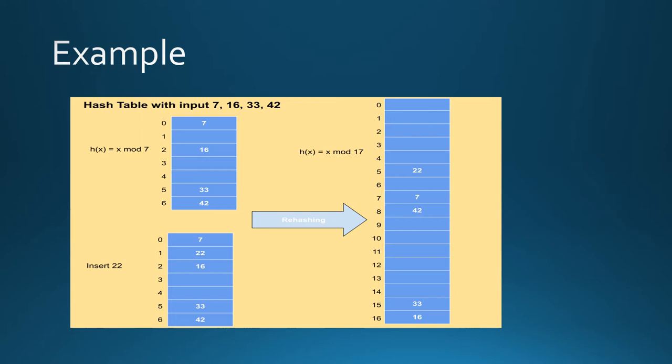To rehash the table, first take the table size and double the table size and take the nearest prime value. Here the table size is 7, double the table size it means 14 and the nearest prime number is 17. So the rehashing table size is 17.